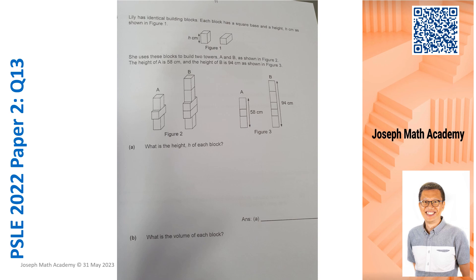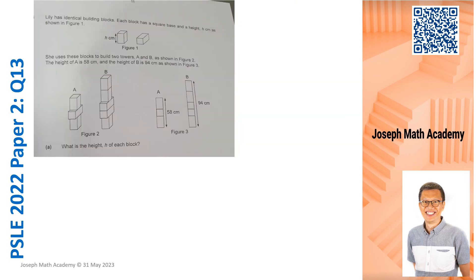This is question 13 we are solving today, we are discussing today. It's about stacking up of identical building blocks. Question A is asking us to find the height H cm in each block. When I read, I am aware that Lily has identical building blocks.